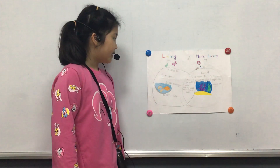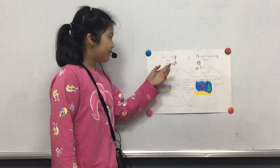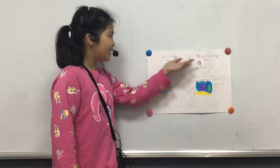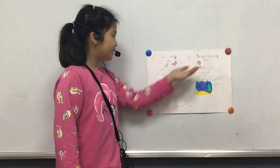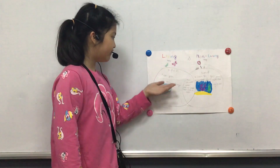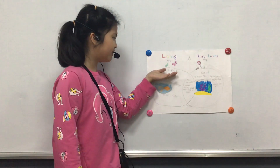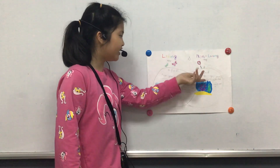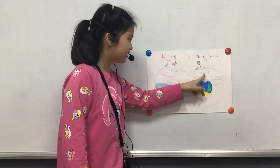My Venn diagram is about living things and non-living things. A living thing is a fish and a non-living thing is sand.